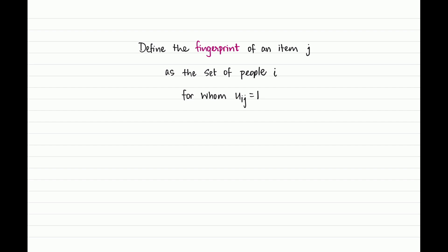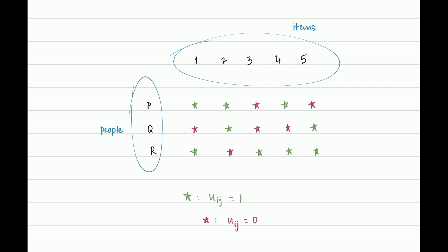From the perspective of an allocation, for each fingerprint I just need to know how many items a person received from that fingerprint — that's all I need to evaluate the utility. To be concrete: suppose you have five items labeled one through five and three people p, q, r, with a utility matrix where green stars indicate that a person values the corresponding item. If you look at this, you can identify two items that share the same fingerprint — valued by the same set of people, namely p and r.